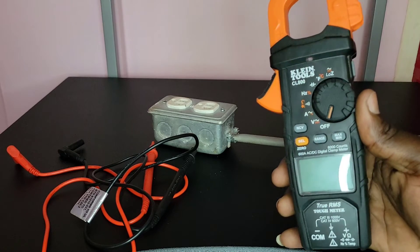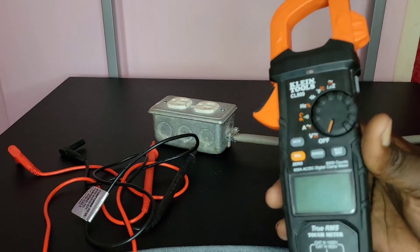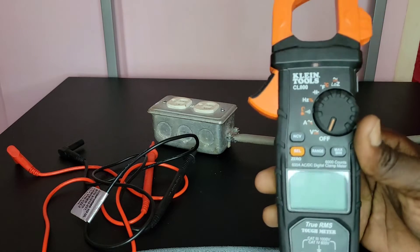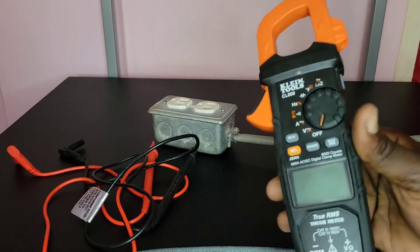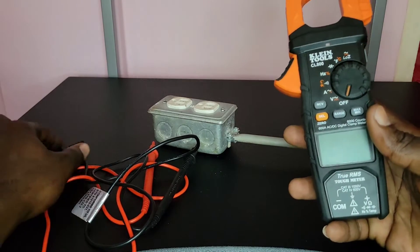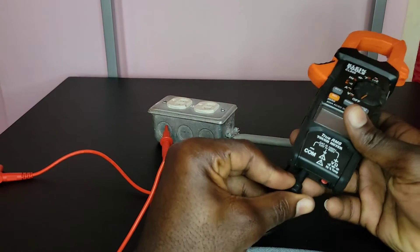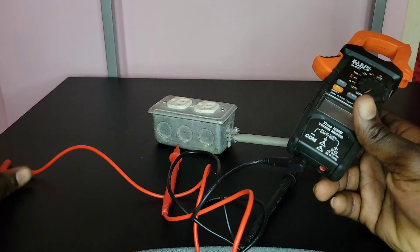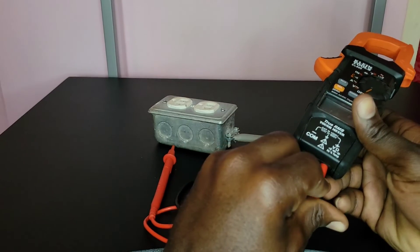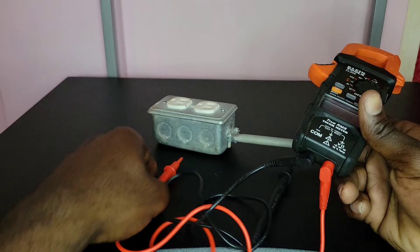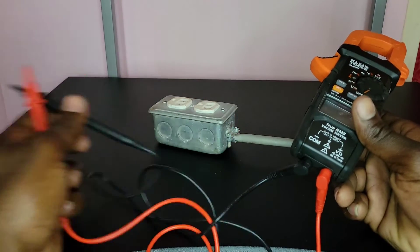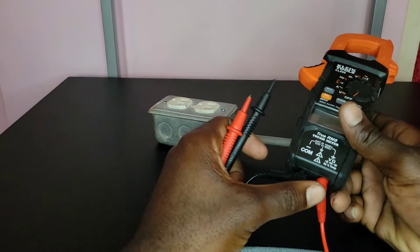This meter that I'm using is the Klein Tools CL800, which can measure both frequency and duty cycle. So we're going to go ahead and insert our probes, the common probe to common and red to our positive side.